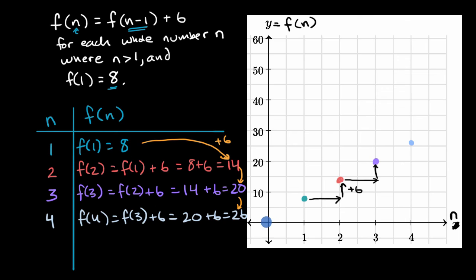So if this were a line, if I were to connect these dots with a line, that line would have a slope of six, because our change in n is one, and then our change in y, or our change in the value of our function, is going to be six every time.